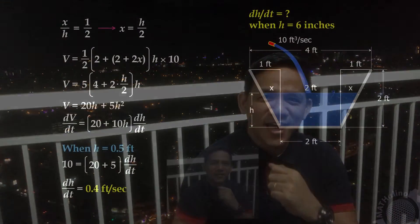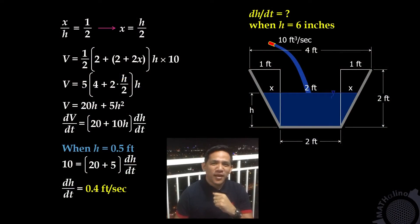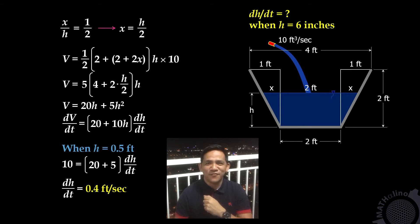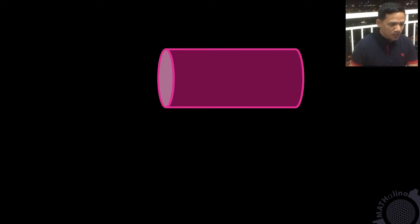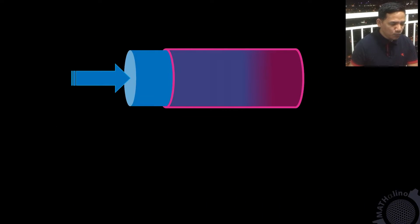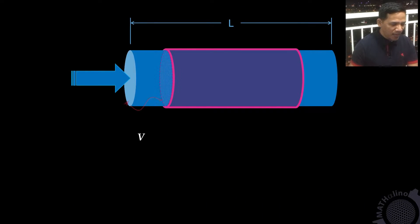As we mentioned earlier, we can solve this problem using a formula in physics. That formula is: discharge is equal to area times velocity. We have this pipe — this volume of water will pass through this area at a specified time. This quantity, v over t, is called the discharge. The symbol for that is Q.